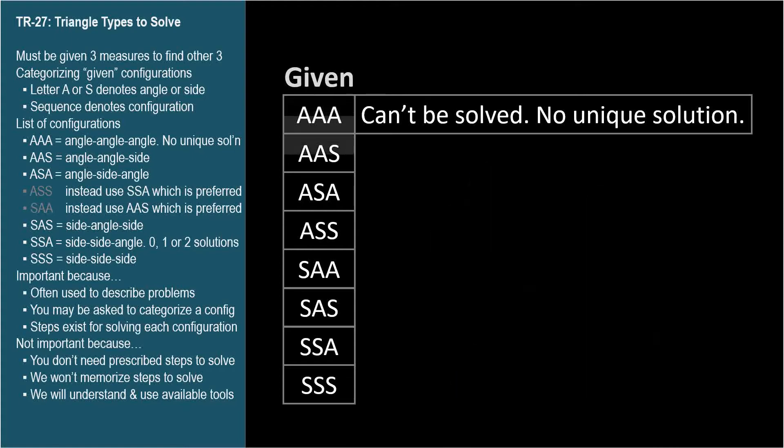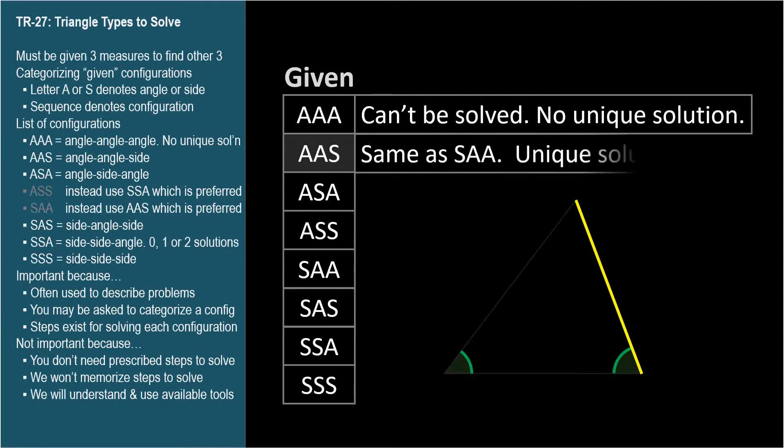The angle, angle, side scenario was in our example a moment ago. We know two angles and a side that's not between them. This is symbolically the same scenario as SAA because the known side is not between the known angles. By convention, the AAS label is used instead of SAA. This configuration of known measures will have a unique solution and is simple to solve. We'll solve all of these except angle, angle, angle in a few videos after we learn the new tools required.